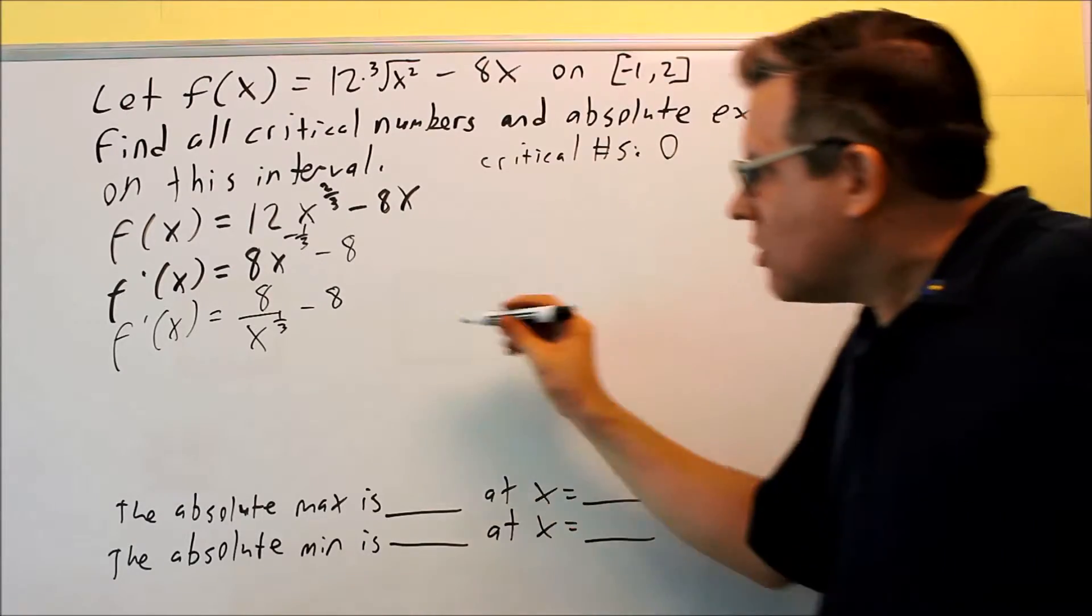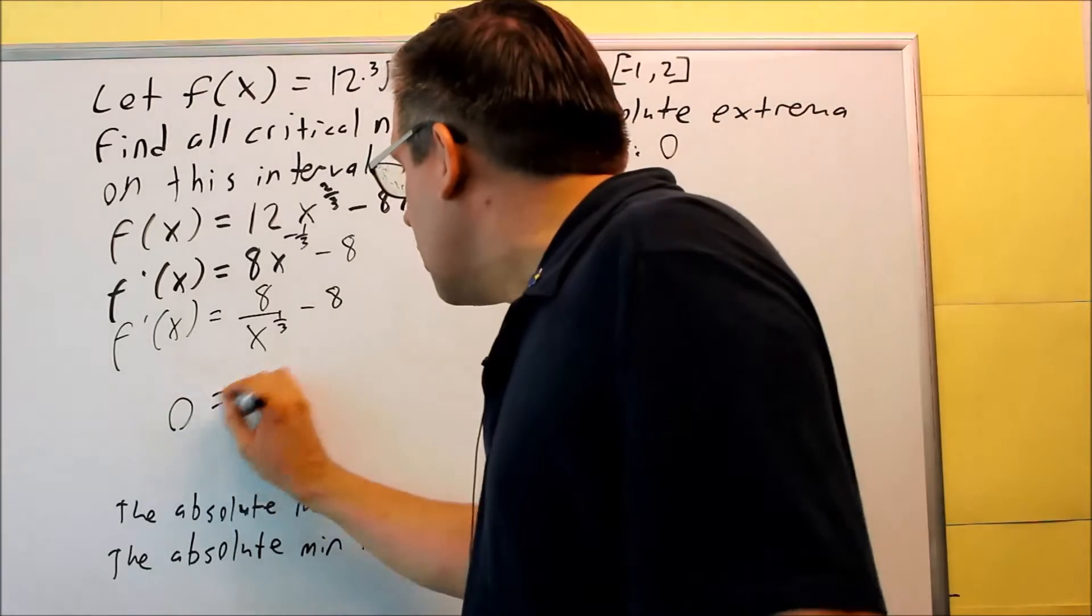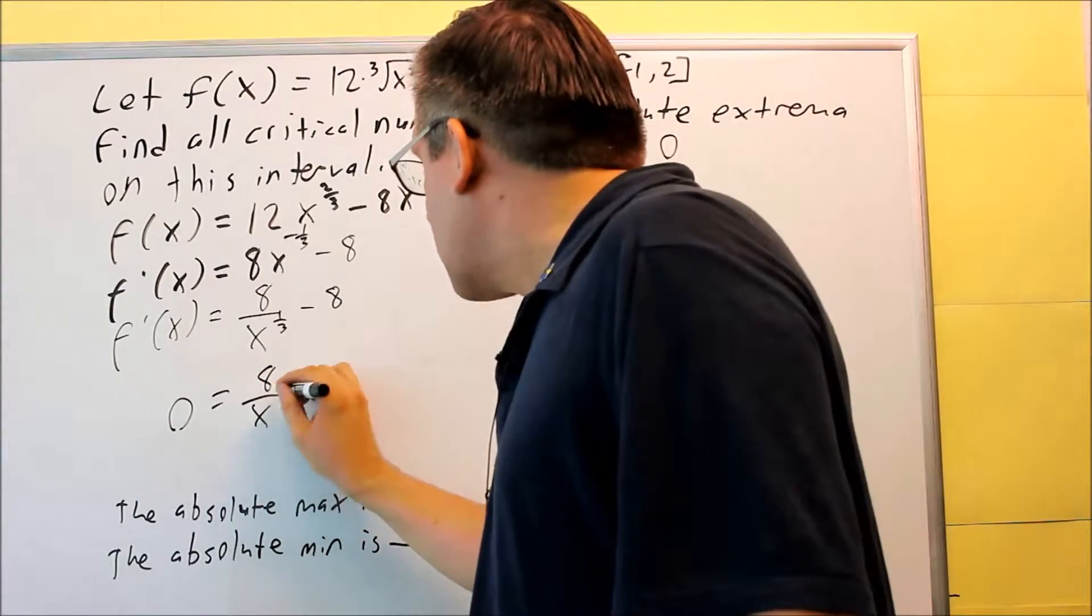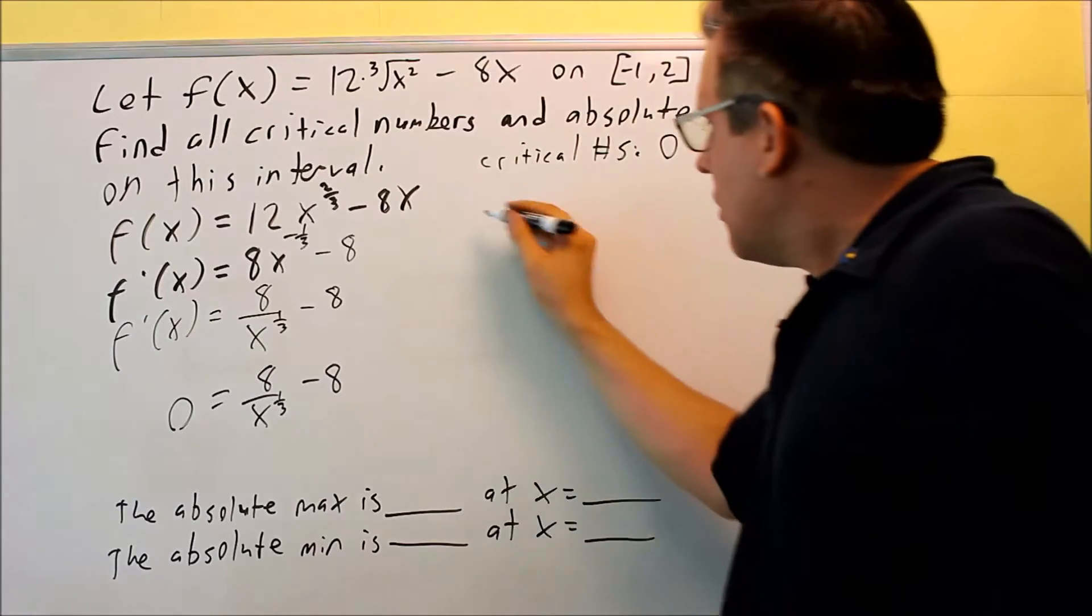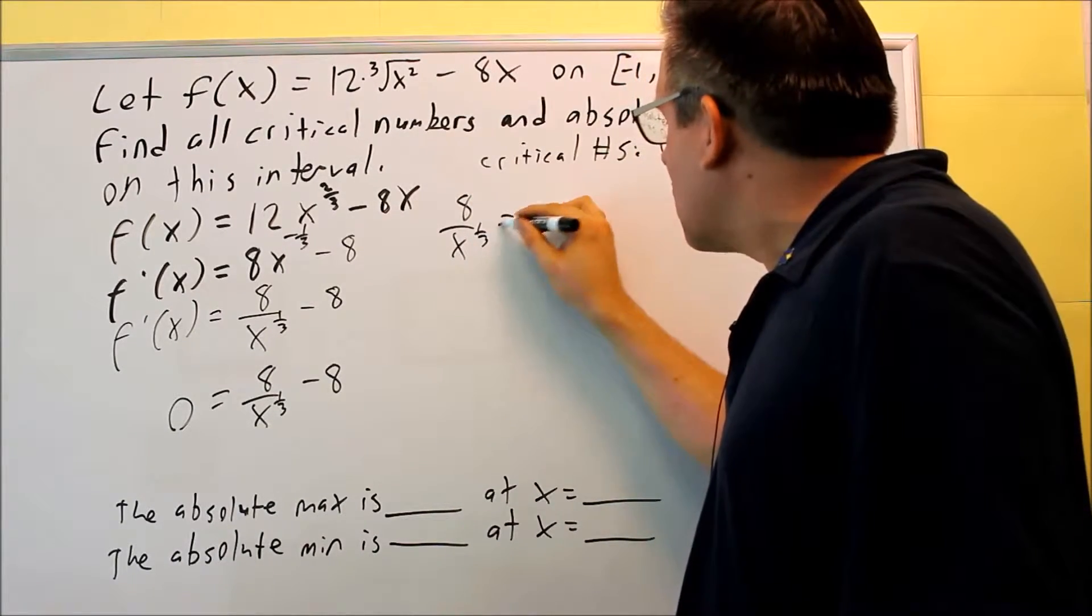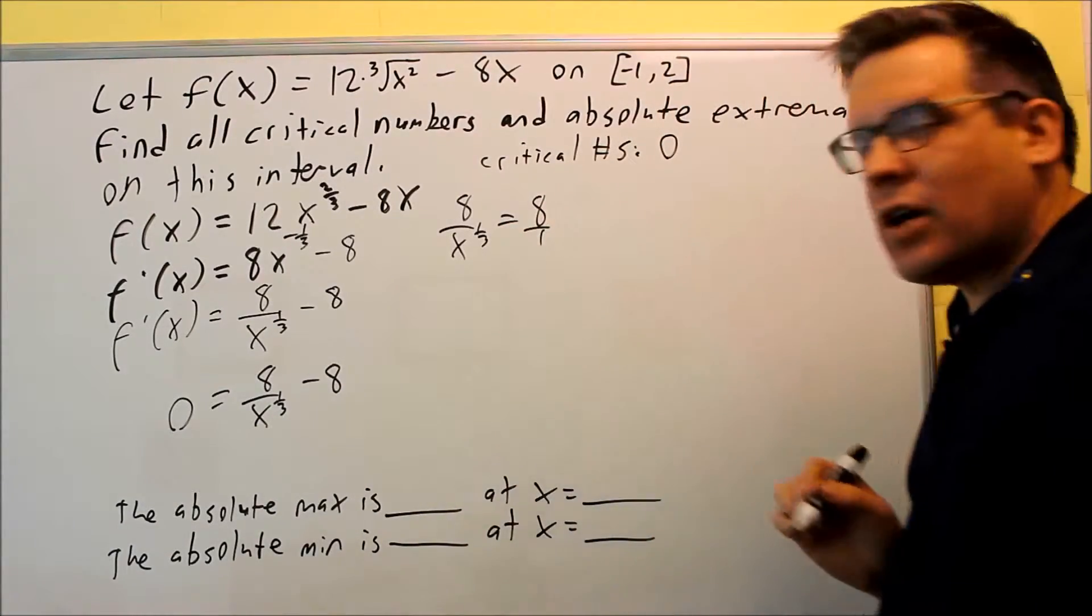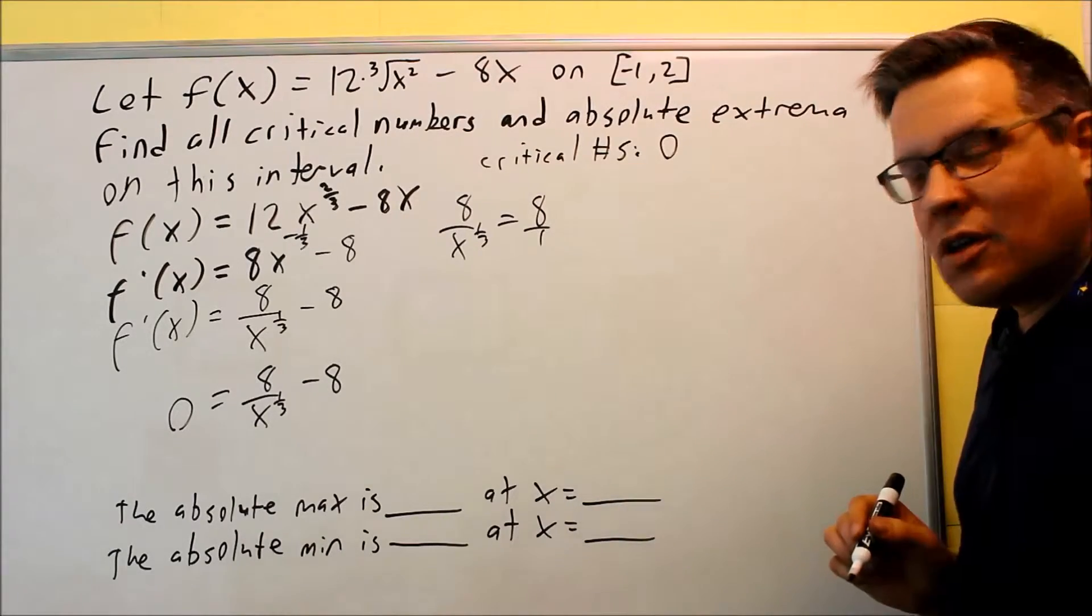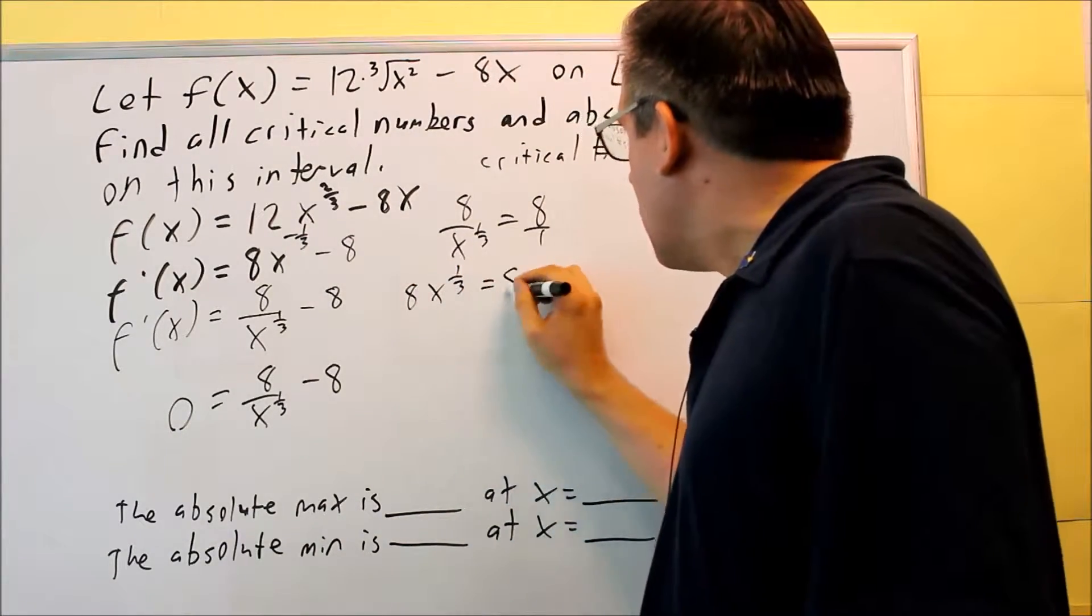The other way to find critical numbers is if you take this and set it equal to 0. So 0 equals 8 over x to the 1/3 minus 8. I want to solve for this. I'm going to add the 8 to the other side, and I'm going to do some cross multiplying here. I can write that as 8 over 1. If I cross multiply, I get 8x^(1/3) equals 8.